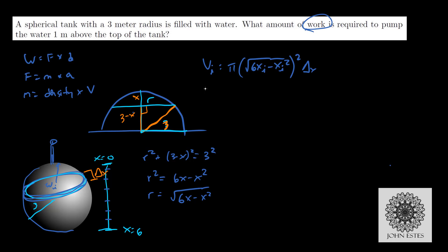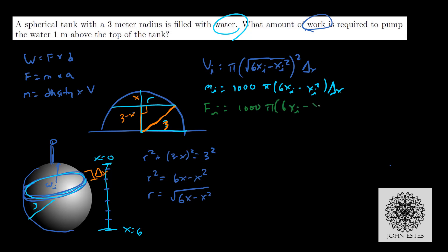From there we just need to calculate the mass. Mass is density times volume. Since I'm dealing with water, I know that density is 1,000 kilograms per meter cubed, so mass equals 1,000 times pi times (6xi minus xi squared) times delta x. So then I can calculate a force: Fi equals that mass — 1,000 pi times (6xi minus xi squared) delta x — times acceleration due to gravity, which is 9.8 meters per second squared.